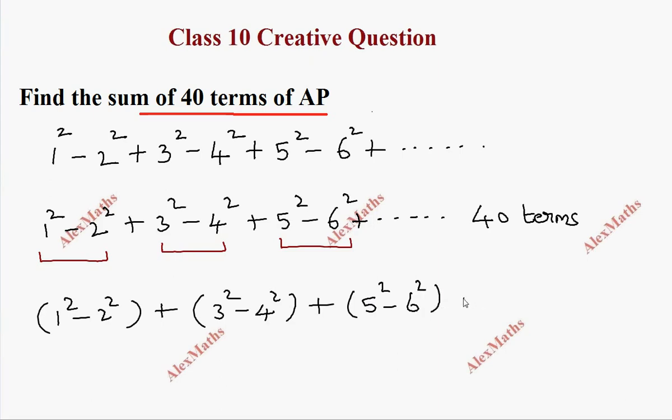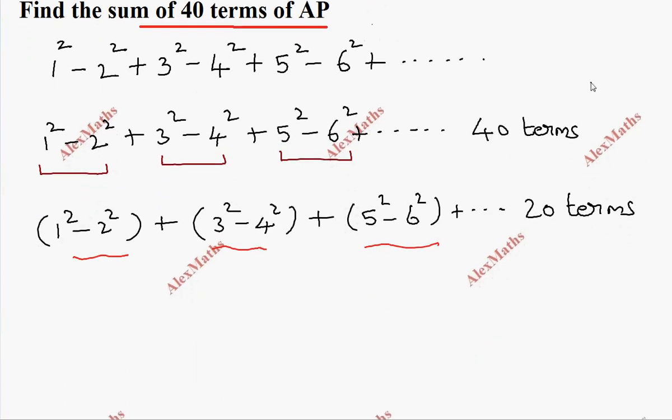Eventually 40 terms in total. The values: 1 minus 4, 9 minus 16, 25 minus 36.